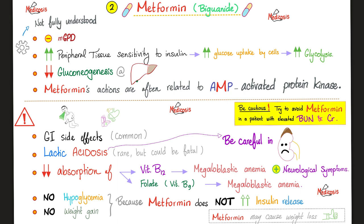Metformin. The mechanism of action is not fully understood. Some argue that it inhibits MGPD — the mitochondrial glycerophosphate dehydrogenase — which is probably why it can suppress gluconeogenesis and act like insulin but unlike glucagon. Metformin increases the peripheral tissue sensitivity to insulin; the receptor will tend to listen to insulin better, which increases glucose uptake by the cell and increases glycolysis. Metformin can suppress gluconeogenesis mainly in the liver. Another mechanism is that metformin's actions are related to adenosine monophosphate-activated protein kinase, also known as AMPK.